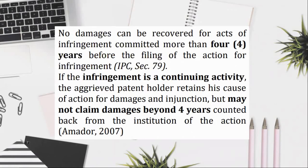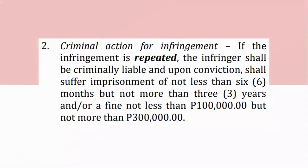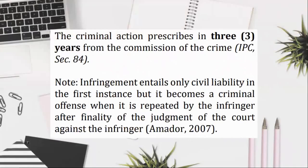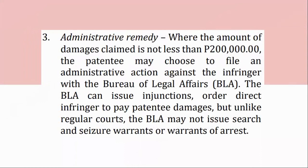(2) Criminal Action for Infringement: if the infringement is repeated, the infringer shall be criminally liable and upon conviction, shall suffer imprisonment of not less than 6 months but not more than 3 years and/or a fine not less than P100,000.00 but not more than P300,000.00. The criminal action prescribes in 3 years from the commission of the crime, IPC, Section 84. Note: infringement entails only civil liability in the first instance, but it becomes a criminal offense when it is repeated by the infringer after finality of the judgment of the court against the infringer. Amador, 2007. (3) Administrative remedy: where the amount of damages claimed is not less than P200,000.00, the patentee may choose to file an administrative action against the infringer with the Bureau of Legal Affairs (BLA). The BLA can issue injunctions and order the direct infringer to pay patentee damages, but unlike regular courts, the BLA may not issue search and seizure warrants or warrants of arrest.